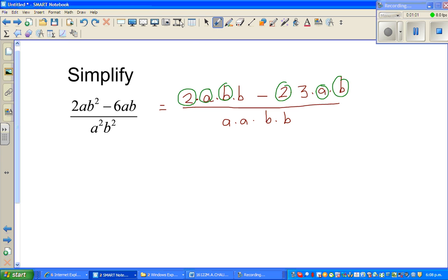So what is common? I'm going to write the next step like this: 2ab times b minus 2ab times 3. So 2 times a times b can be written—this is 2ab squared and this is 6ab over ab times ab.